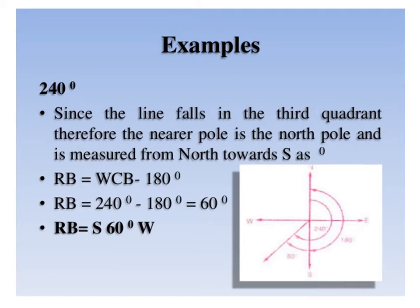For WCB of 240 degrees, since the bearing is 240 degrees, that line lies in the third quadrant. It is nearer to the south pole and is measured from north towards south. Therefore, reduced bearing equals WCB minus 180 degrees: 240 minus 180 equals 60 degrees. Since the line lies in the south-west quadrant, the reduced bearing is S 60 degrees west.